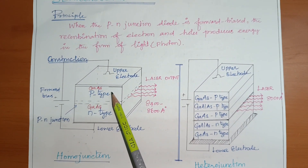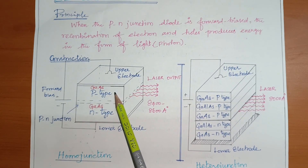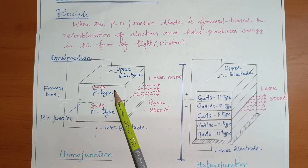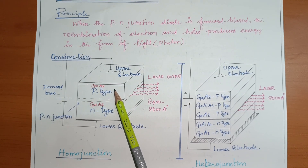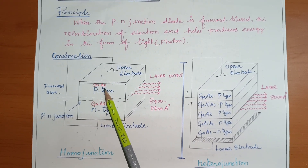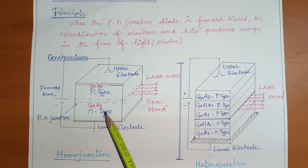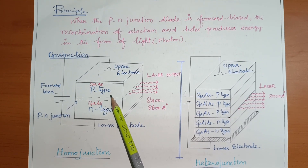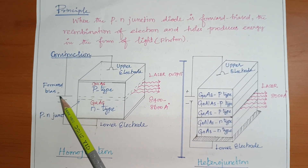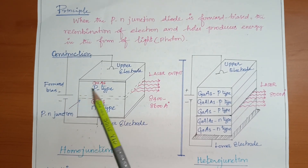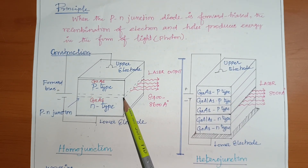There are three major components required to produce laser. First is the active medium, which is gallium arsenide p-type and gallium arsenide n-type. Second is the pumping source, which is electric pumping — a direct pumping method. Third is the optical resonator.